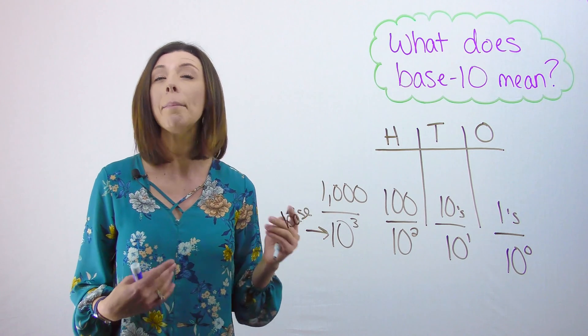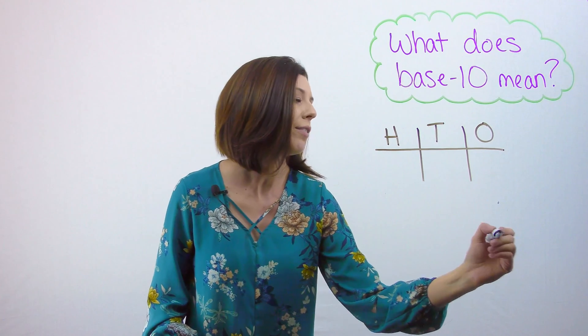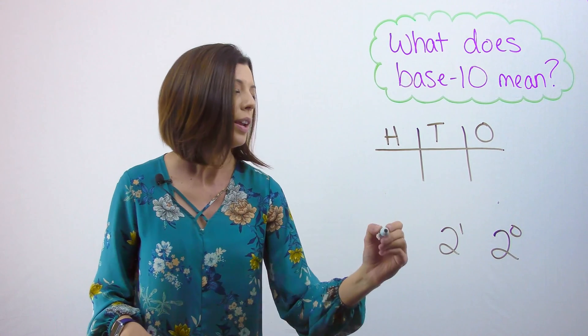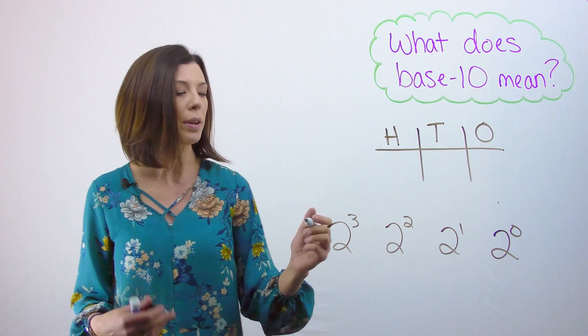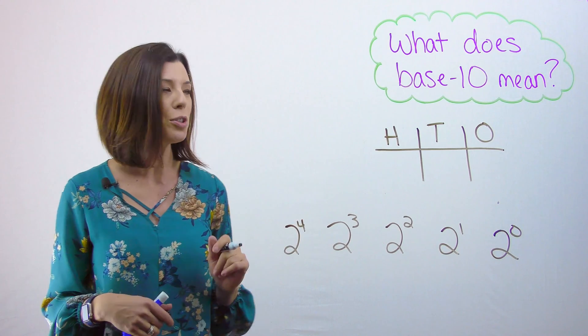Let's say we were operating in base-2. We could write a very similar example. Now again, you'll notice I have 2 to the power of 0, 2 to the power of 1, 2 squared, 2 cubed, and I could keep going. 2 to the fourth. I don't need to stop. I could keep going forever. But here's where it gets tricky.